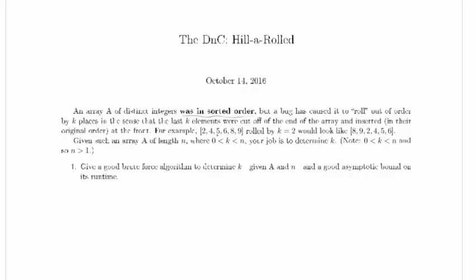So 2, 4, 5, 6, 8, and 9 rolled by k equals 2 would look like 8, 9, 2, 4, 5, 6. We took these last two elements and rolled them around to the front, so now they're up here.